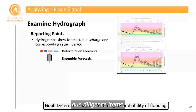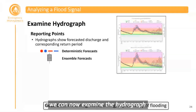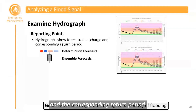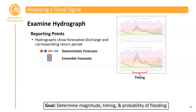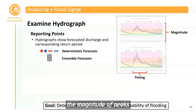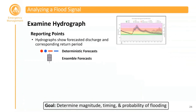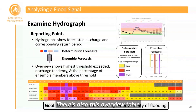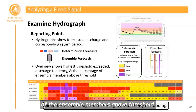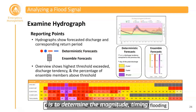Now that we've completed these due diligence items, we can examine the hydrograph. With reporting points, the hydrographs show the forecasted discharge and the corresponding return period. Looking at the plots, you can also see the timing of peaks, the magnitude of peaks, and the severity or exceeded critical threshold. There is also an overview table showing the highest threshold exceeded, the discharge tendency, and the percentage of ensemble members above threshold. The goal is to determine the magnitude, timing, and probability of the predicted flooding.